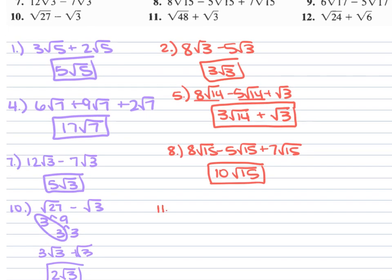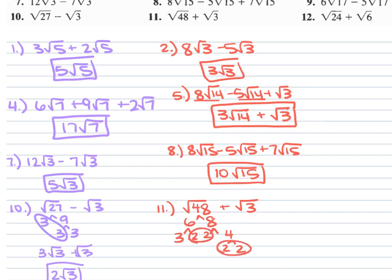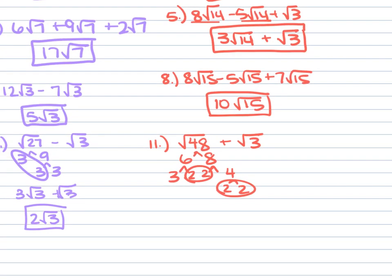Problem 11: square root of 48 plus square root of 3. The 48 simplifies to 6 times 8; 8 is 2 times 4, 4 is 2 times 2, 6 is 2 times 3 — that gives two pairs of 2's, so this is 4 square root of 3 plus square root of 3. 4 plus 1 is 5 square root of 3.